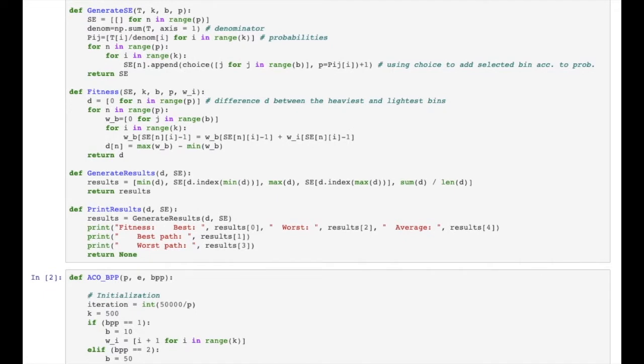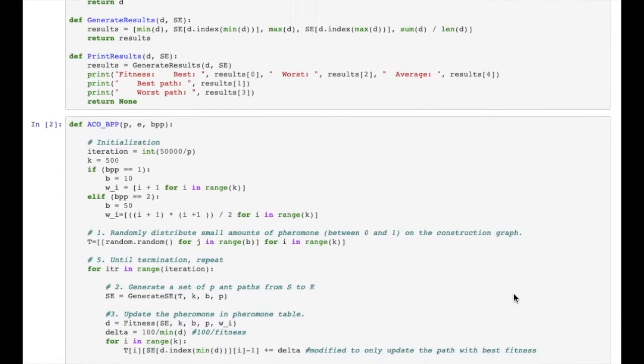Here we have the function which generates SE, the path from start to finish. Then we have a fitness function which returns the fitness, where a lower fitness value indicates a better path. And also the function for generating results and printing results.